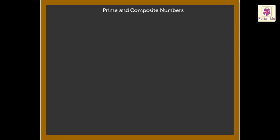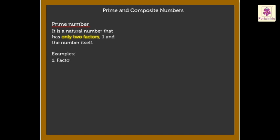Prime and Composite Numbers. A prime number is a natural number that has only two factors, one and the number itself. Look at these examples. The factors of 3 are 1 and 3.